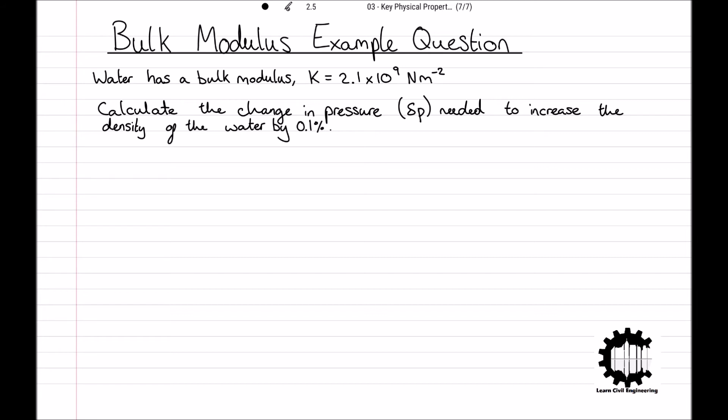Now that you've had a chance to attempt this question, let's work through it now. Here, we want to increase the density of the water by 0.1 percent, so we can write that the change in rho is equal to 0.001 rho. And additionally, we are told that the bulk modulus of water, K, is equal to 2.1 times 10 to the 9 newtons per meter squared.